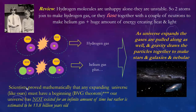Scientists have proved mathematically that in any expanding universe — including ours — there must be a beginning. So mathematically it can't have existed forever. This is called the BBG theorem. Our universe therefore has not existed for an infinite amount of time, but rather is estimated to be 13.8 billion years old. Our universe had a birthday.